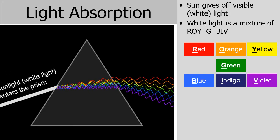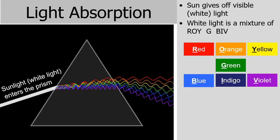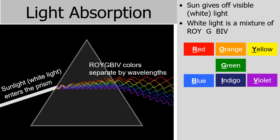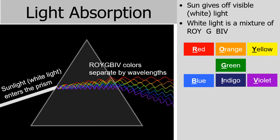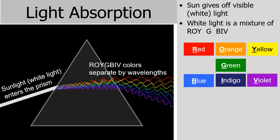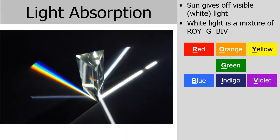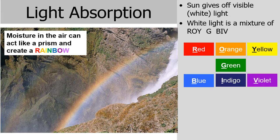In this animation, white light enters from the left, and because of the curvature of the prism, the wavelengths of the colors begin to separate. Notice the red wavelength is longer and the violet wavelengths are more narrow. You can see white light coming in and a rainbow coming out. Similarly, water in the air can act like a prism — that's why we see rainbows after rain or near a waterfall.